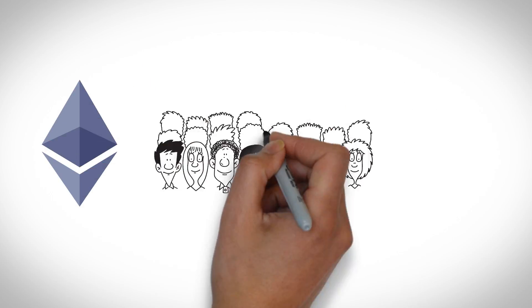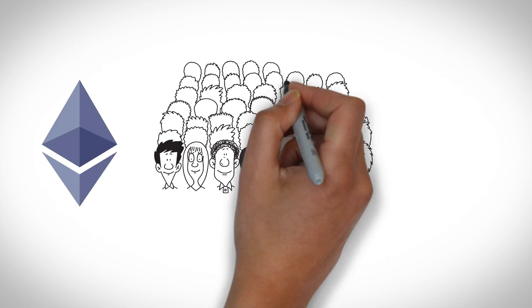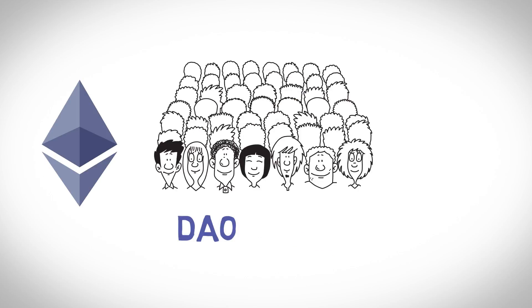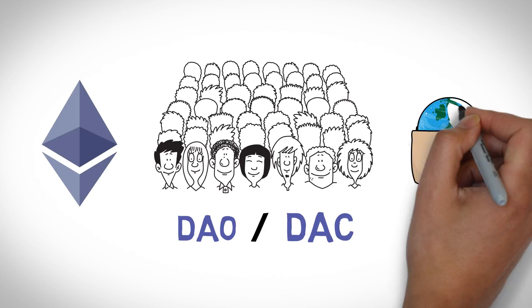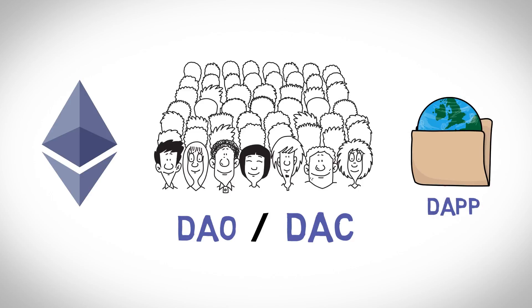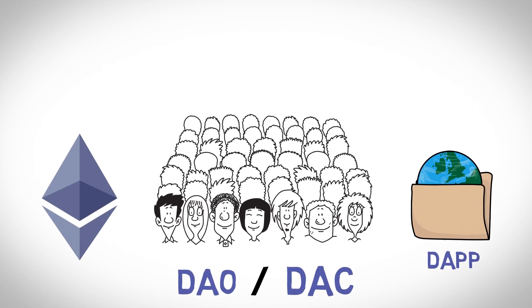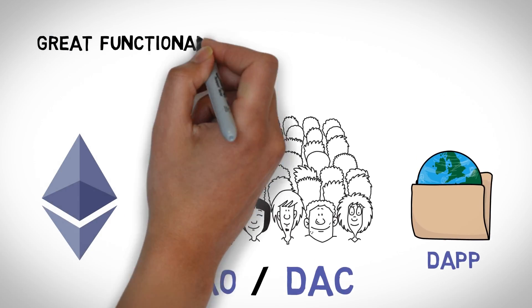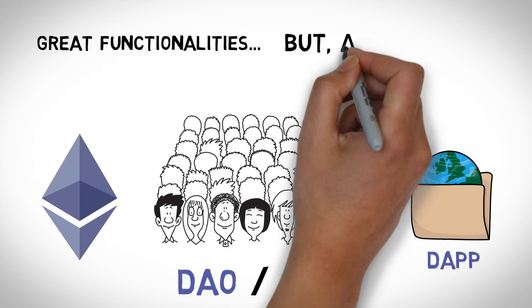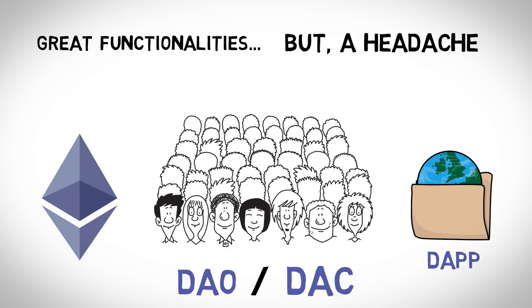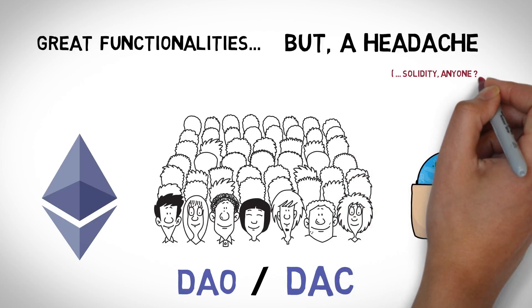For example, Ethereum provides support for decentralized autonomous organizations, called DAOs or DACs, and decentralized applications, which are called DAPs. These functionalities are great, but keeping track of all the terms, definitions, and contract structures quickly becomes a headache. The need to program in new languages like Solidity compounds the difficulties.